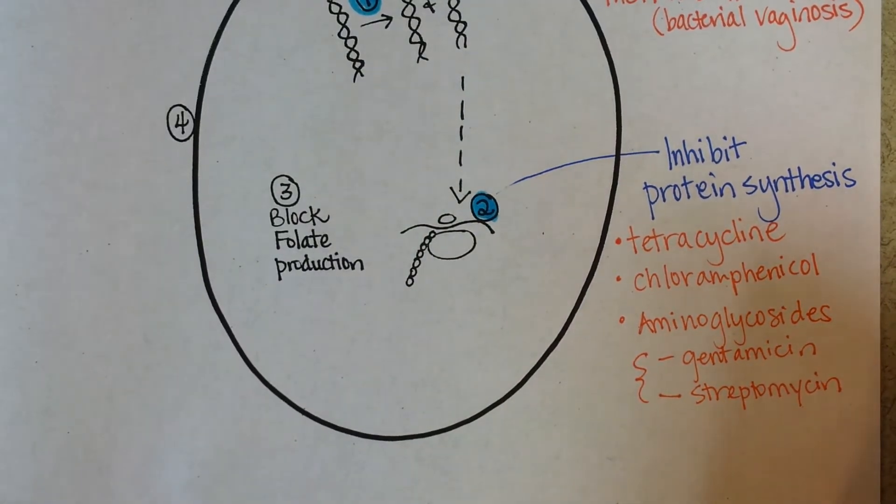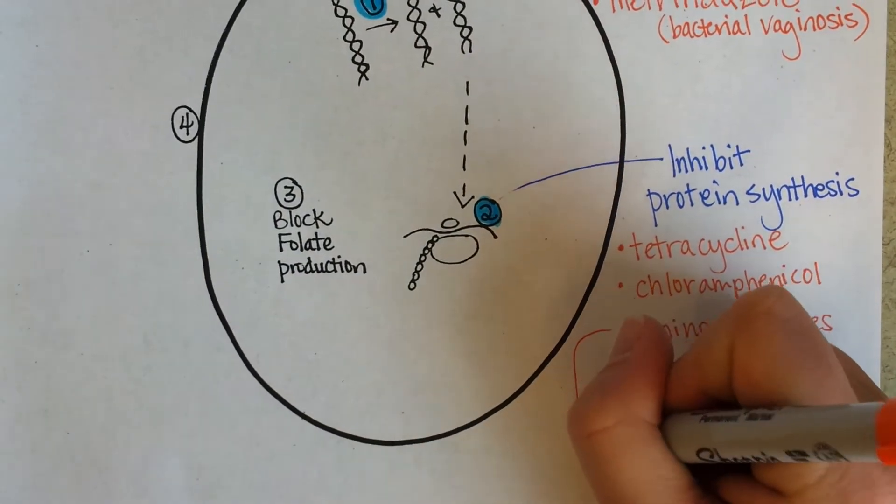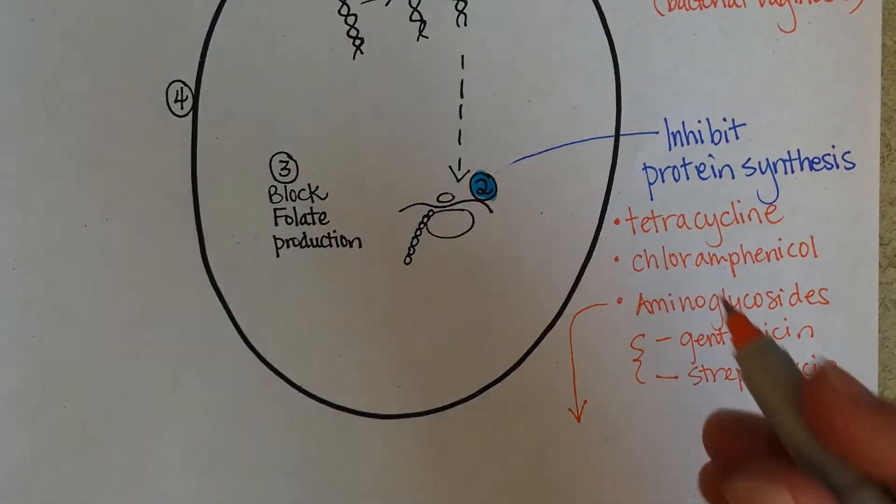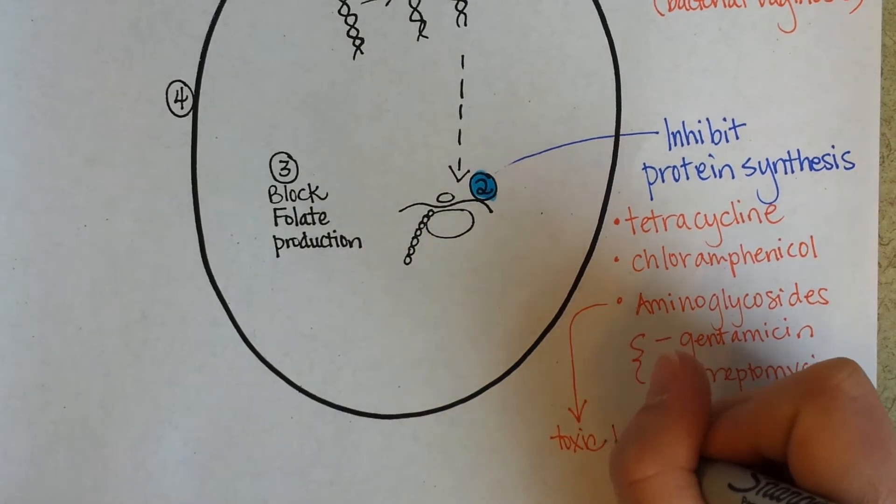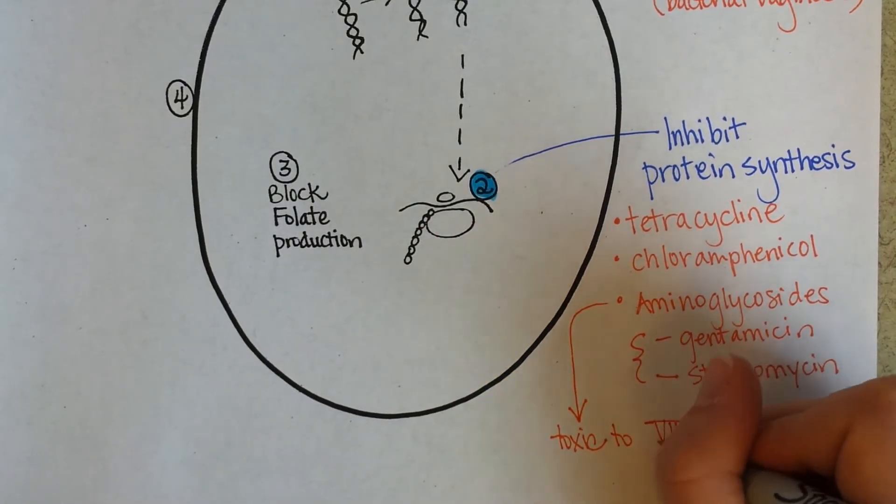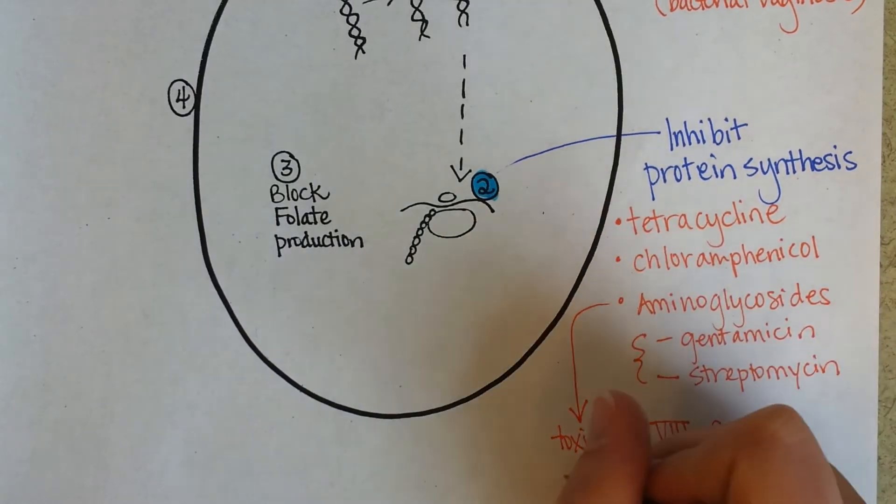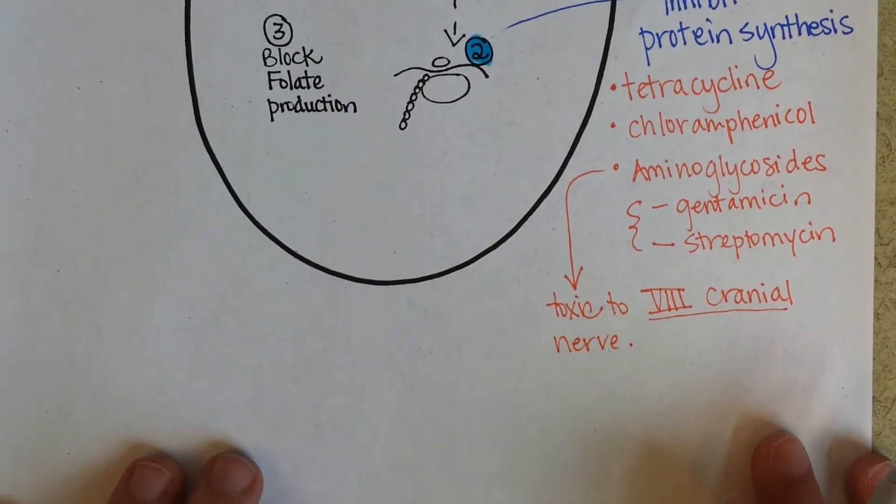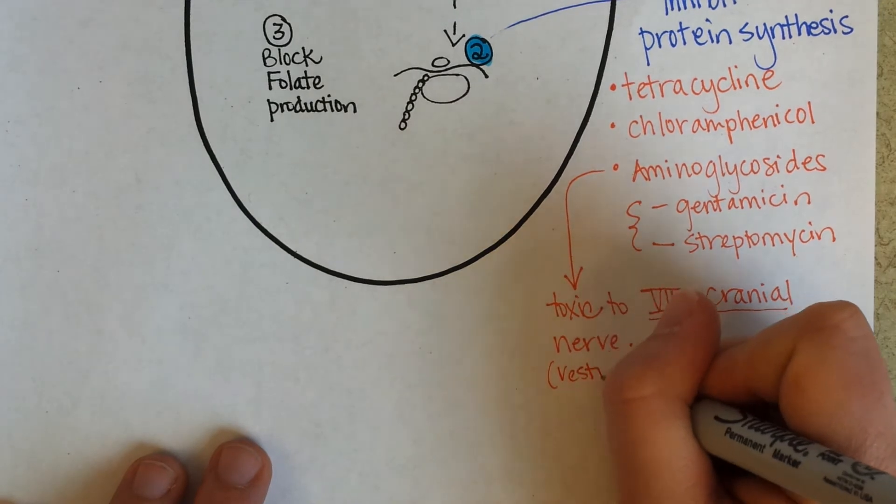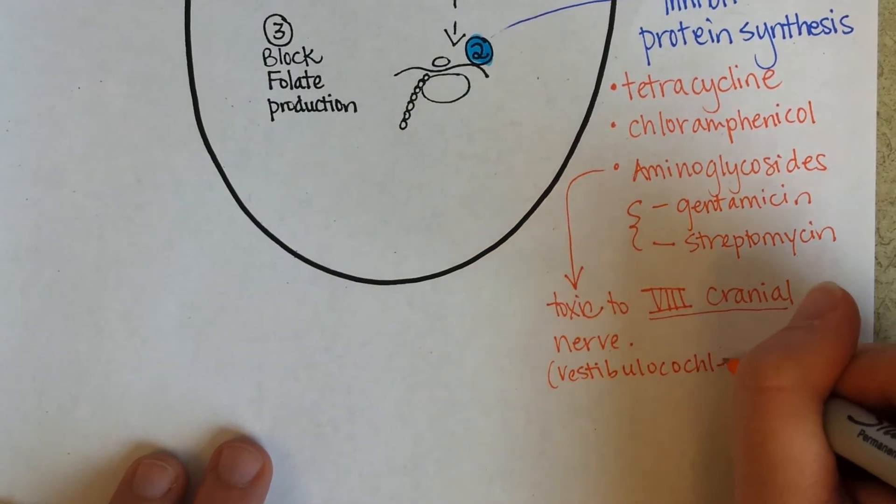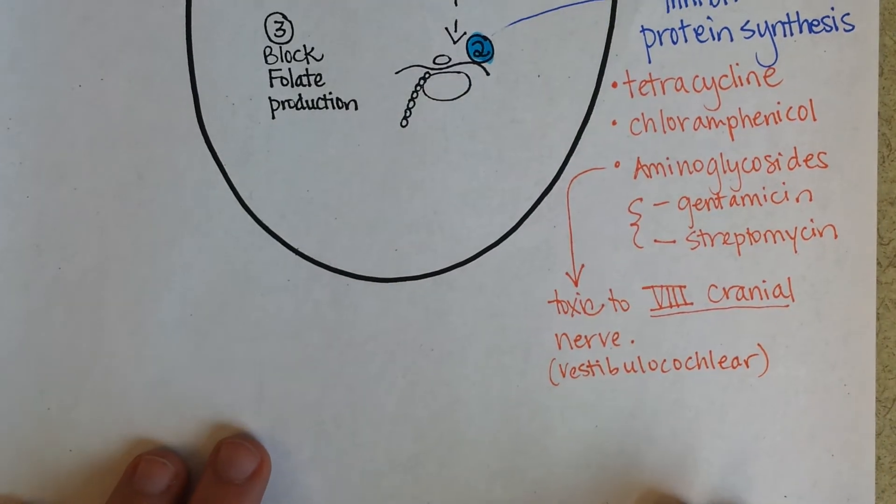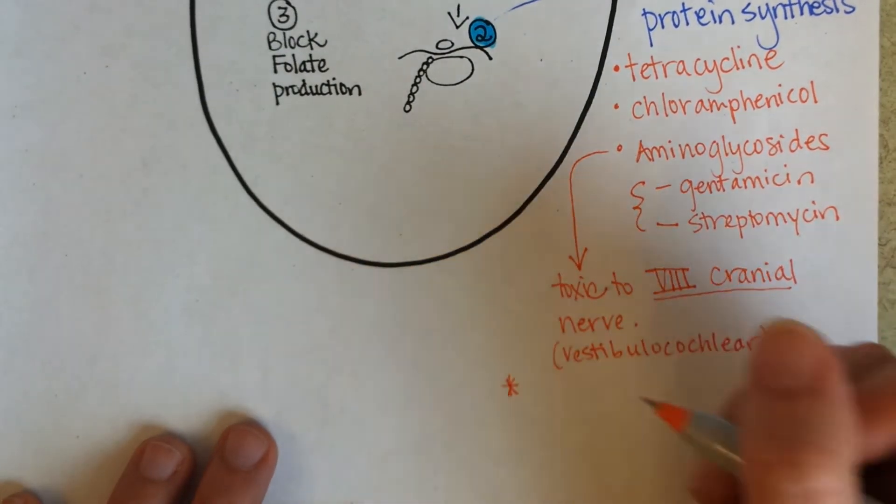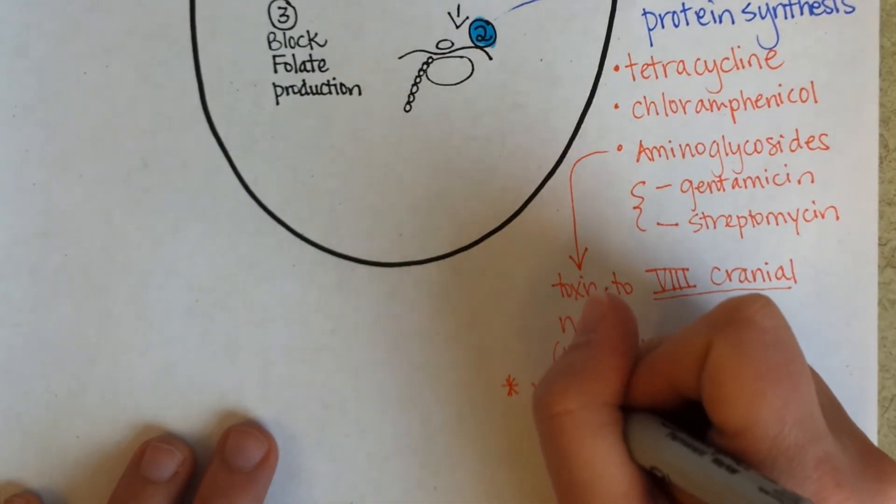And both of these aminoglycosides, both of these examples, are known for being toxic to the eighth cranial nerve. And if you've taken A&P, you'll know that the eighth cranial nerve is the vestibulocochlear nerve. And so that means it could affect hearing and or balance.